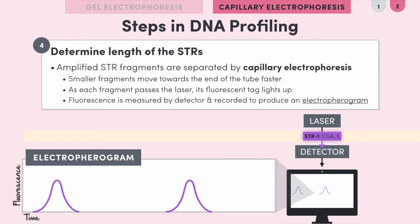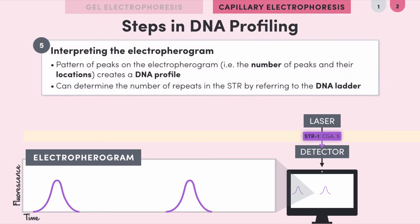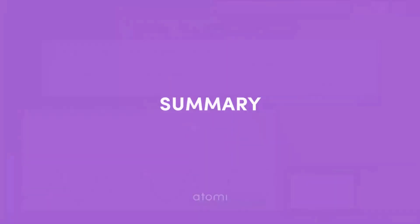This produces a graph called an electropherogram. The resulting pattern of peaks — the number of peaks and their locations — creates a DNA profile. Just like gel electrophoresis, we can figure out the number of repeats for each peak by running a fluorescent DNA ladder. Again, we only did analysis on a single STR; usually to create a full DNA profile we would analyze a set of STRs. We'll save the applications for another lesson.